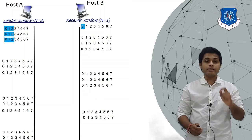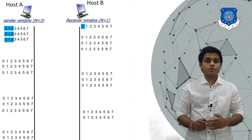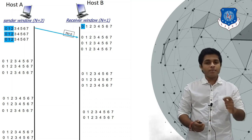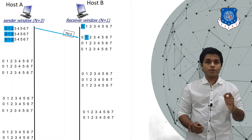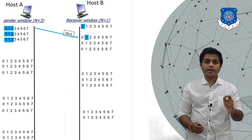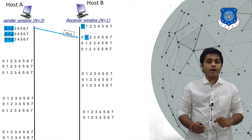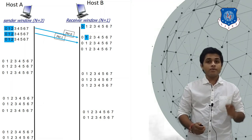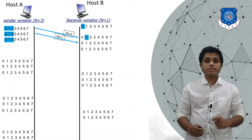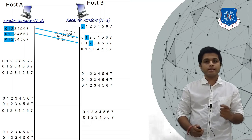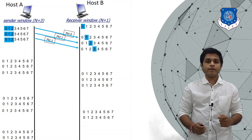From the receiver's window, the current position tells you what packet the receiver is expecting. Right now, receiver B is expecting packet zero, so A will send packet zero. When B receives packet zero, the receiver's window slides from zero to one, meaning B has received packet zero successfully and is now expecting packet one. A sends packet one, the window slides to two, then A sends packet two and the window slides to three.